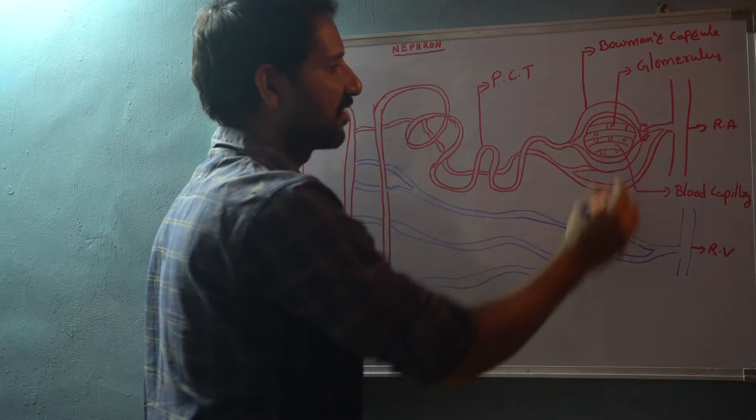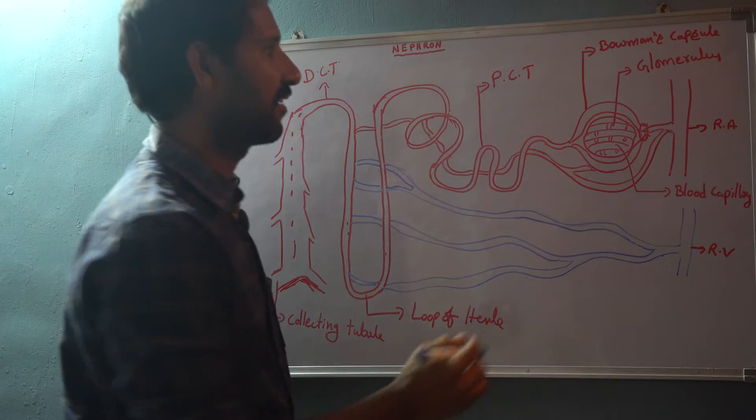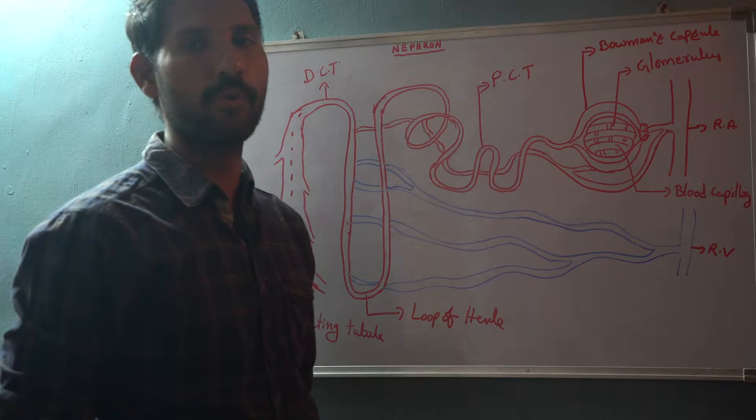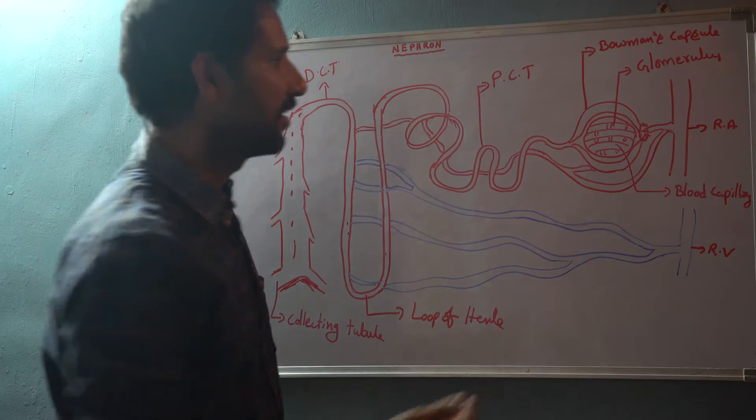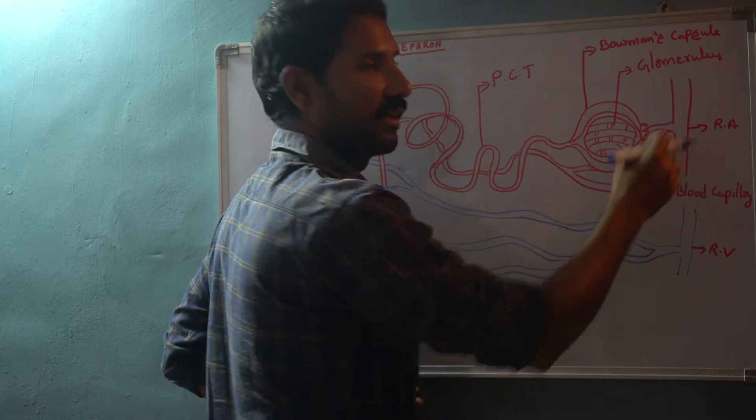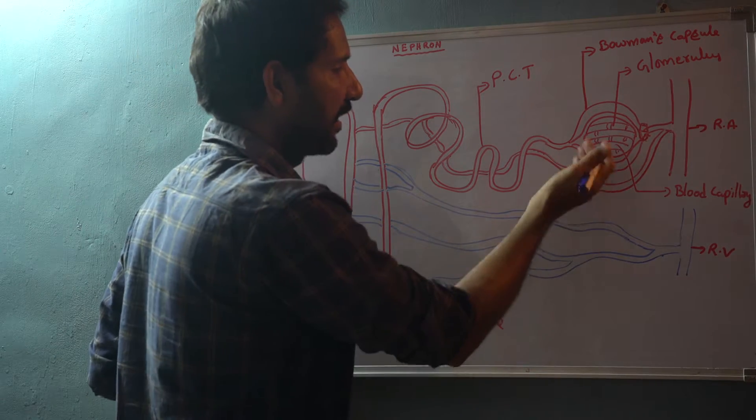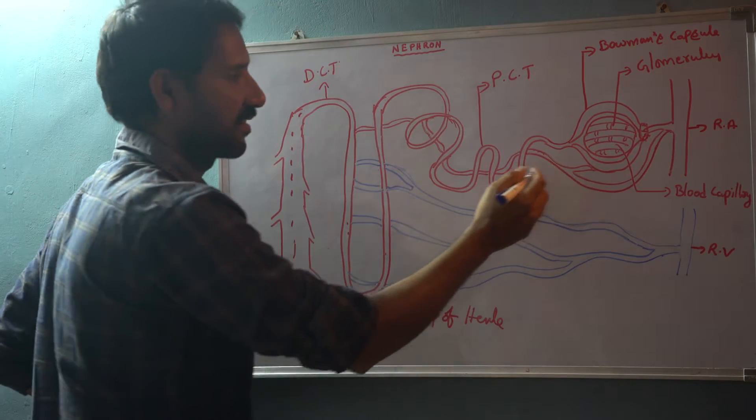Inside the Bowman's capsule we can see the blood capillary network, that is known as glomerulus, which helps in the filtration of blood. From the renal artery, oxygenated blood is supplied and here it gets filtered - excess water and some nutrients.